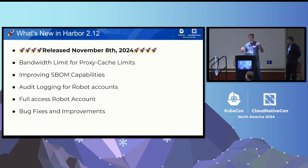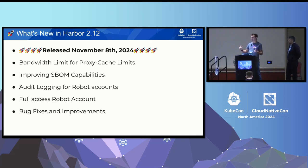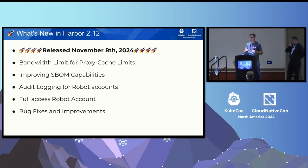We have improved a lot of things around SBOM capabilities, particularly how you consume them from the UI. We've added more audit logging for robot accounts — now when your robot account is doing something on your Harbor instance, you can see much more granular information including timestamps. A long-requested feature is full-access robot accounts, so now your robot accounts are not only capable of working with artifacts but can also do system configuration, create other robot accounts — pretty much automating a lot of things.